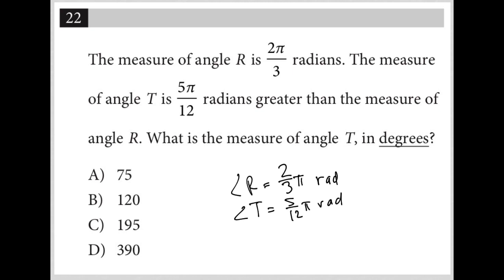Okay, so I messed that up. That's not accurate. It's 5/12π greater, which means we have our 2/3π plus 5/12π.